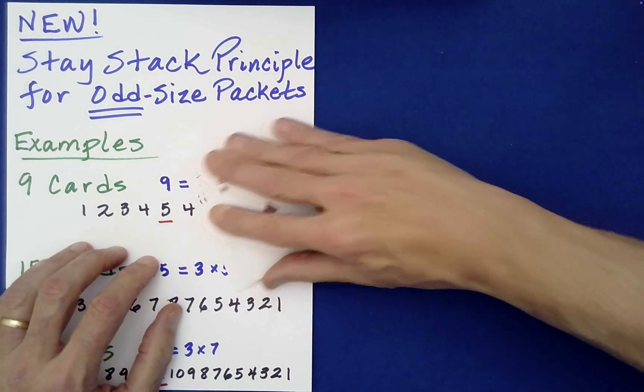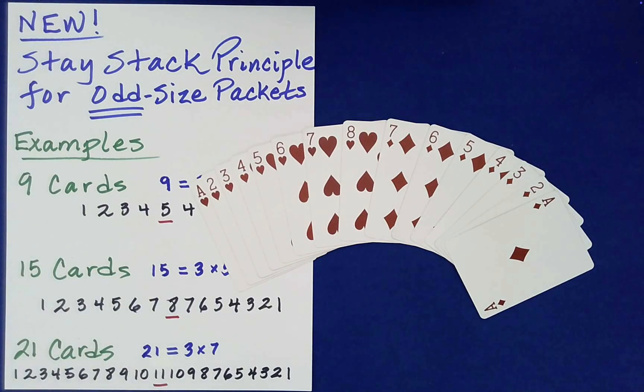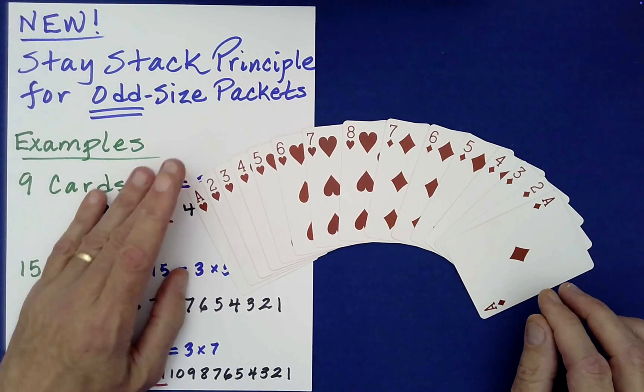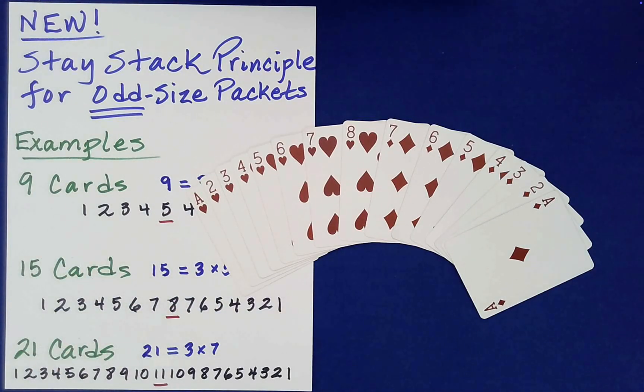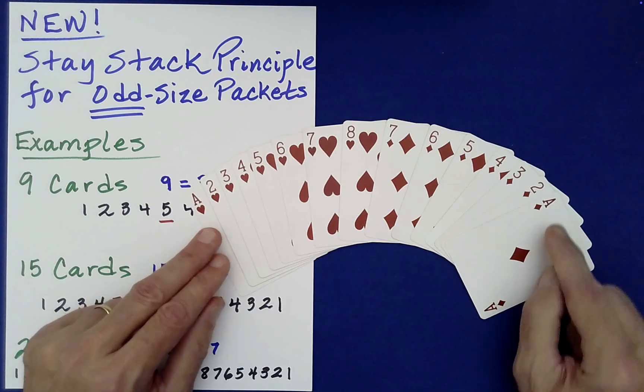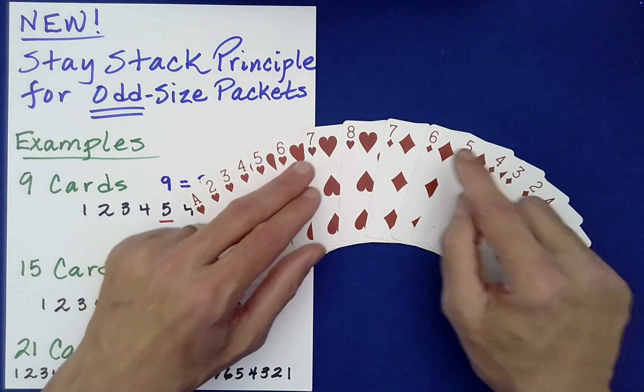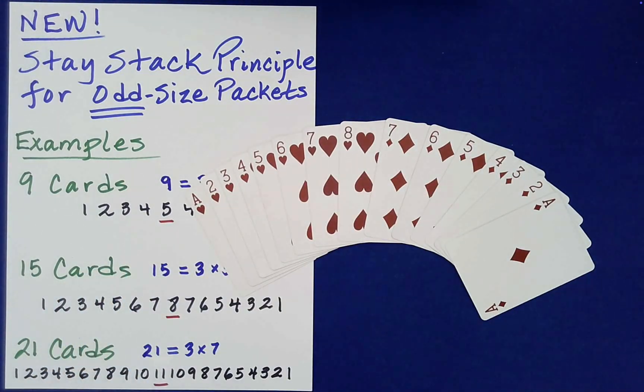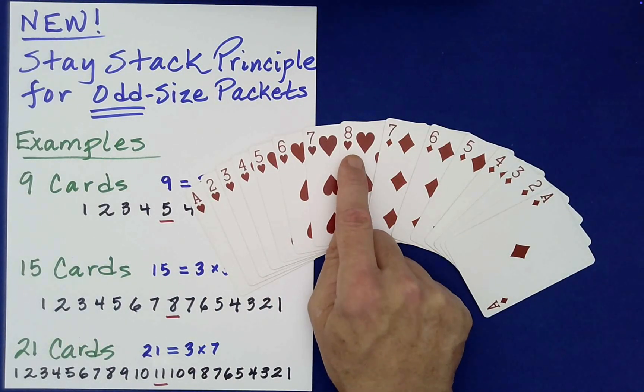Now the size of the packet that I use in the performance was actually 15. So let's look at kind of a quintessential odd size mirrored packet. So the outer ones, same value. So ace, two, three, four, five, six, sevens. And then we have this odd card out. I just put an eight there. So that's where I would have put the king, right, in the performance.